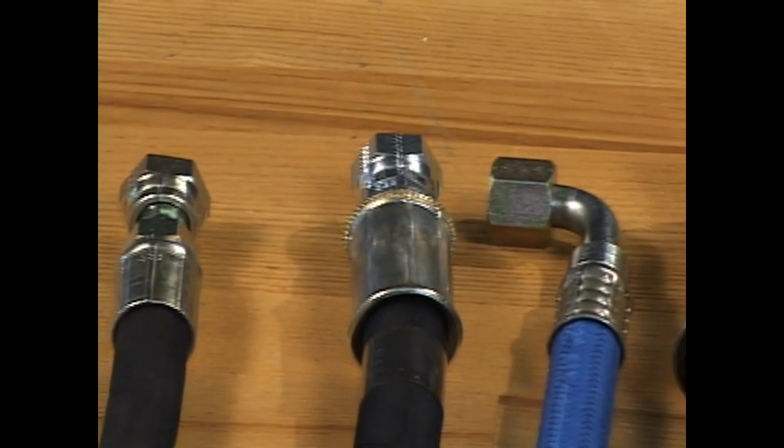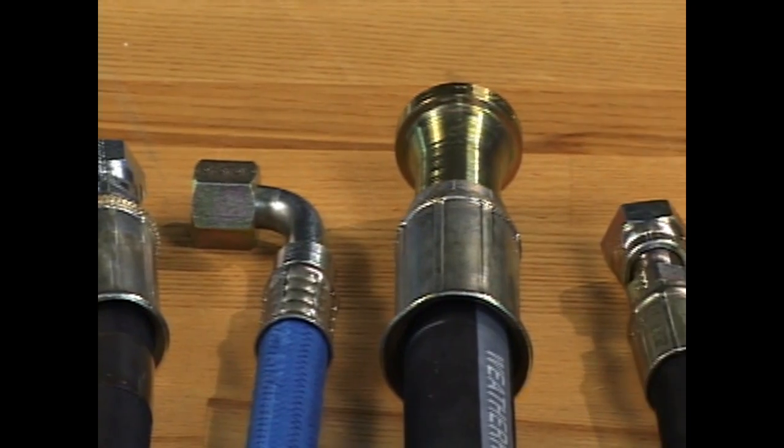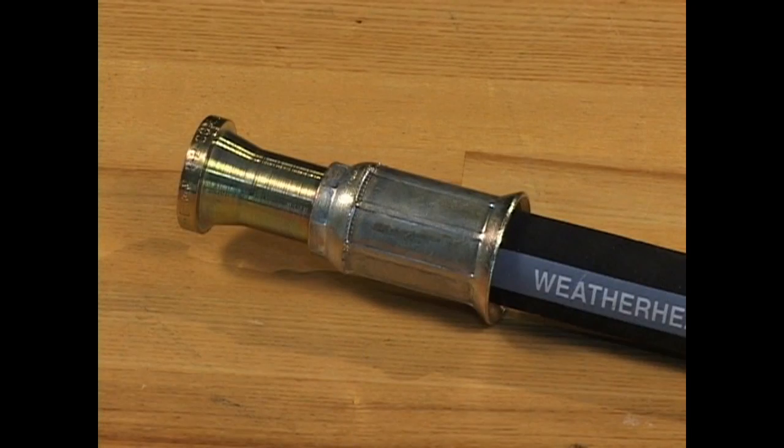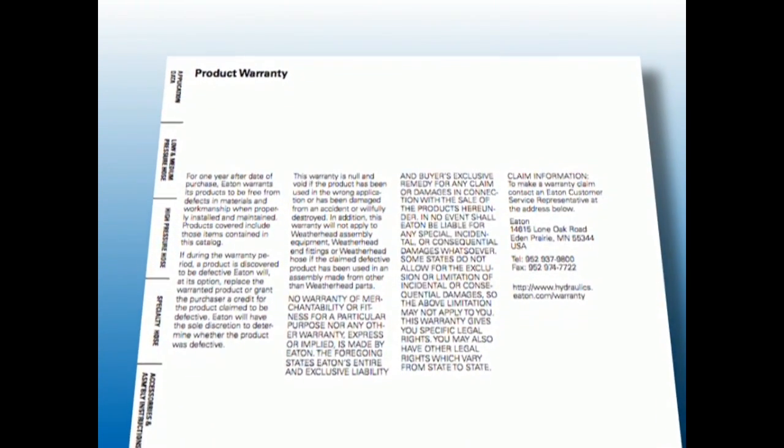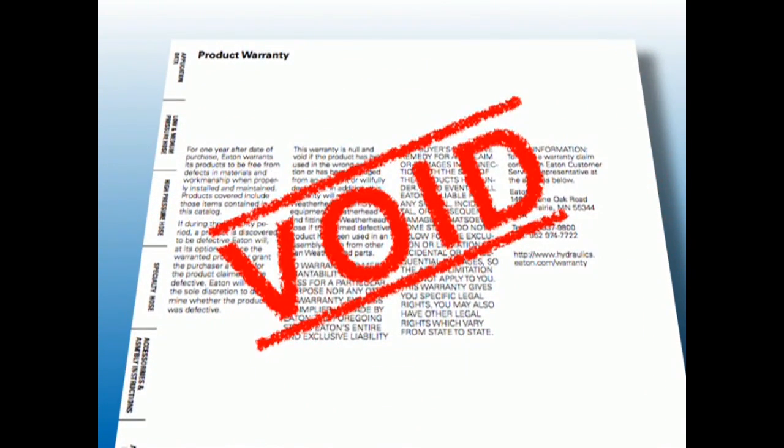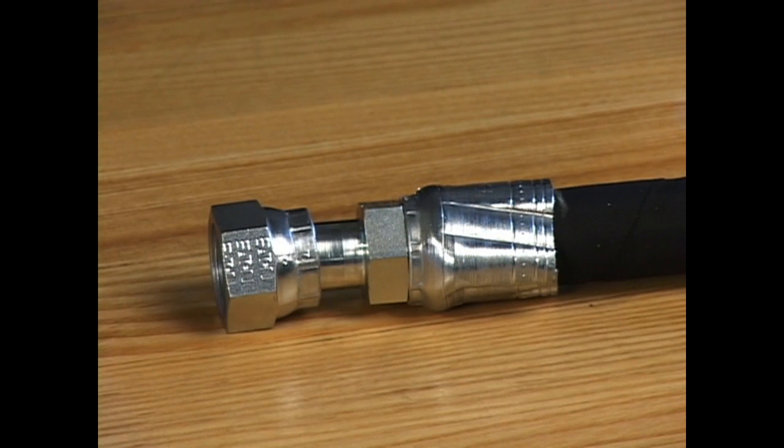ColoCrimp is a proprietary design to be used exclusively with Eaton Weatherhead hose and hose ends. The use of any other components other than Eaton Weatherhead will void the ColoCrimp warranty and may result in the production of an unsafe and unreliable hose assembly.